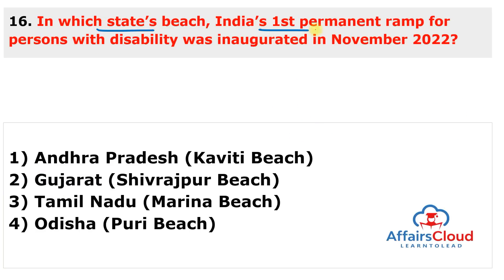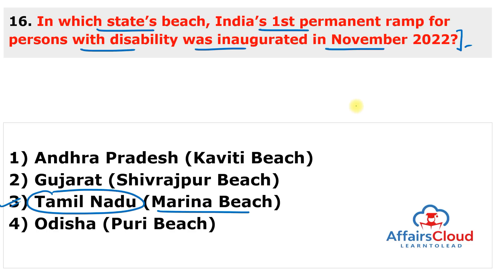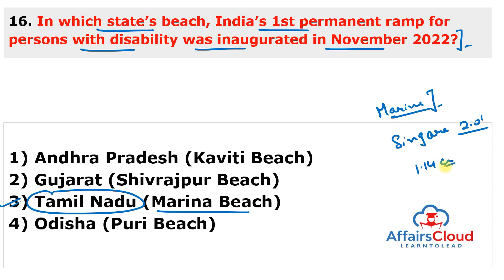Question 16: In which state's beach was India's first permanent ramp for persons with disability inaugurated in November 2022? The answer is Marina Beach, Tamil Nadu. India's first permanent disability ramp was inaugurated at Marina Beach in Chennai, Tamil Nadu. The facility was developed with funding from 'Singara Chennai 2.0' at an estimated cost of ₹1.14 crore and was established by the Greater Chennai Corporation (GCC).